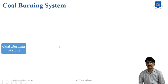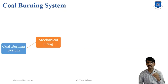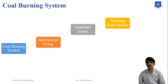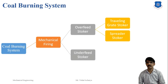The coal burning system is divided into two parts. First is mechanical firing. Mechanical firing stokers are commonly used for solid fuel in medium or small power plants, where the grate is stationary and coal is fed by shovel. In modern power plants, higher efficiency requires a continuously moving grate. Overfeed stokers have two types: travelling grate stoker and spreader stoker. The other type of mechanical firing is the underfeed stoker, which has two types: single retort stoker and multi-retort stoker.